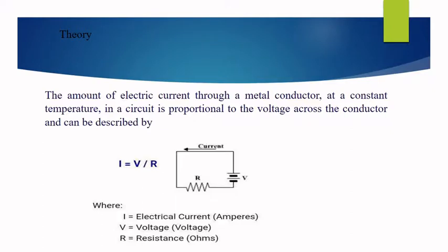Theory: The amount of electrical current through a metal conductor at constant temperature in a circuit is proportional to the voltage across the conductor and can be described by I equals V over R, where I is the electrical current in amperes, V is the voltage in volts, and R is the resistance in ohms.